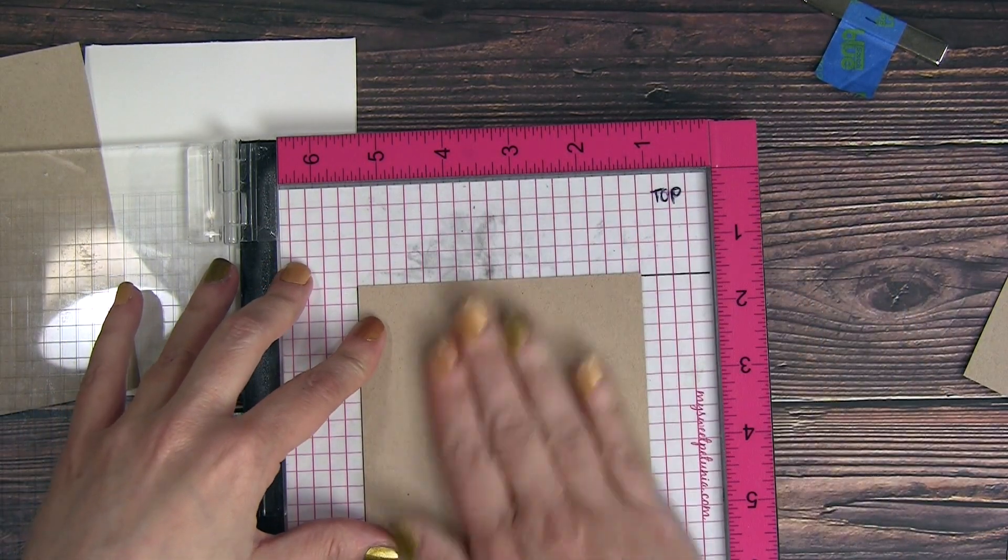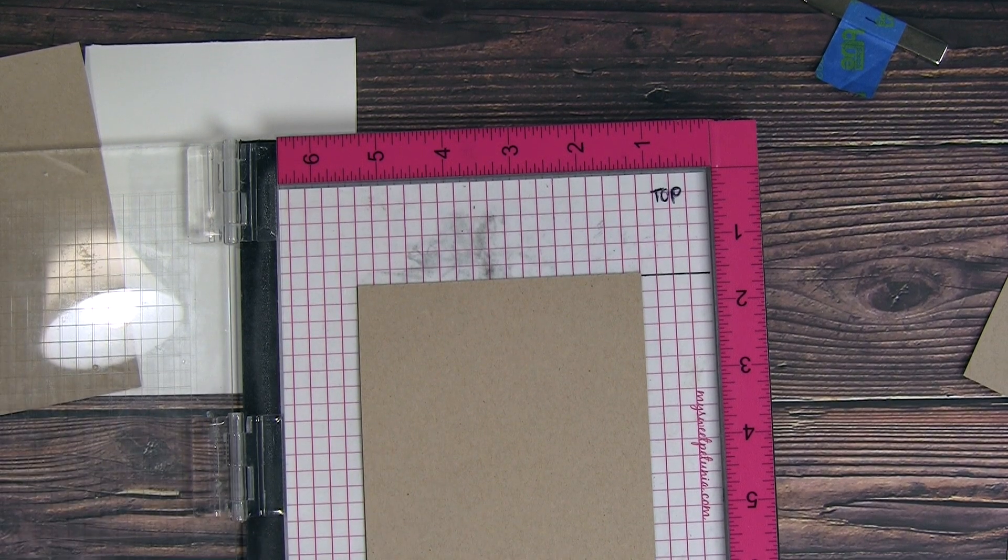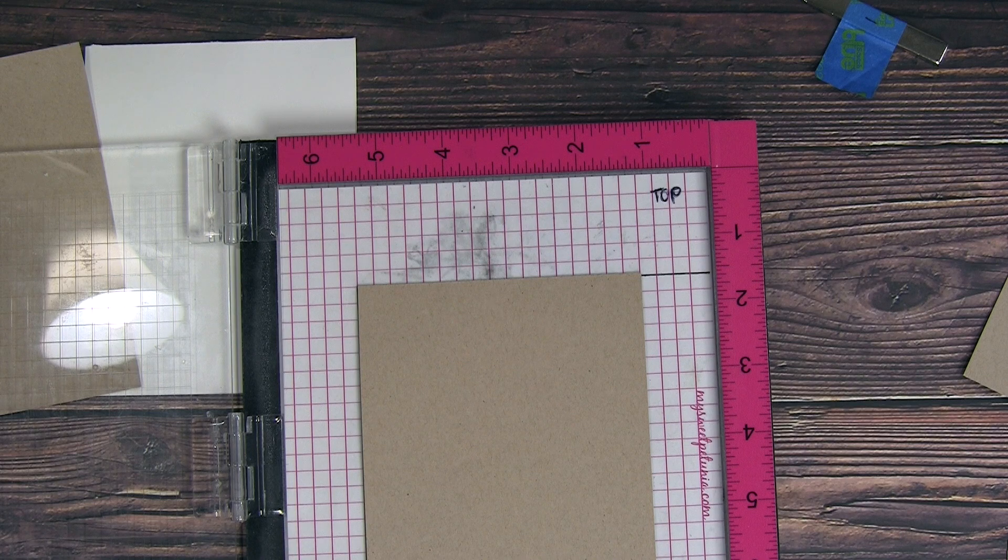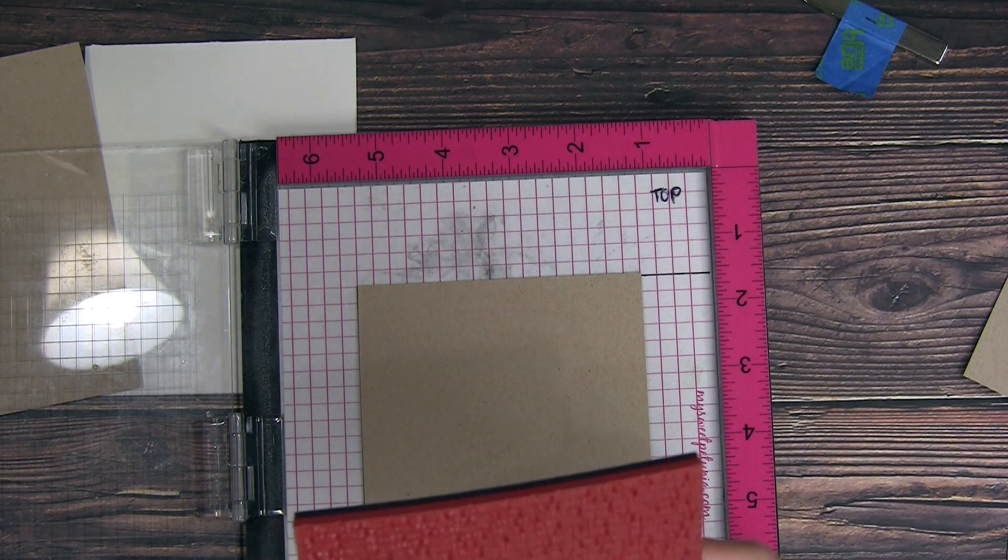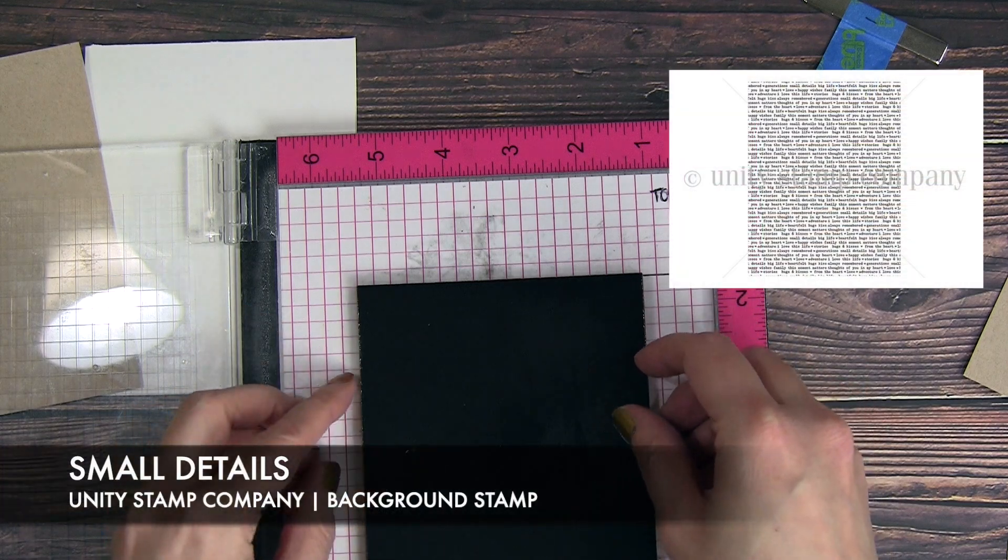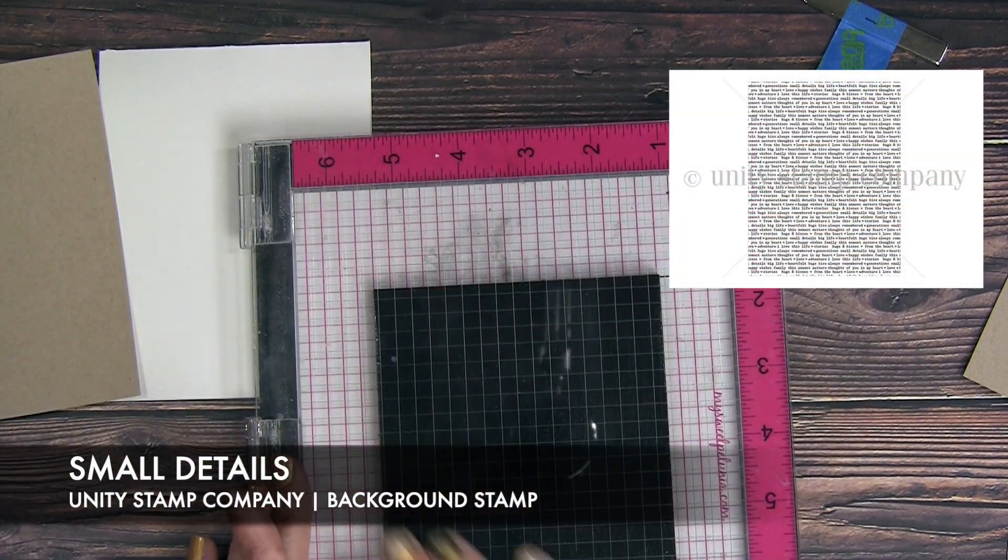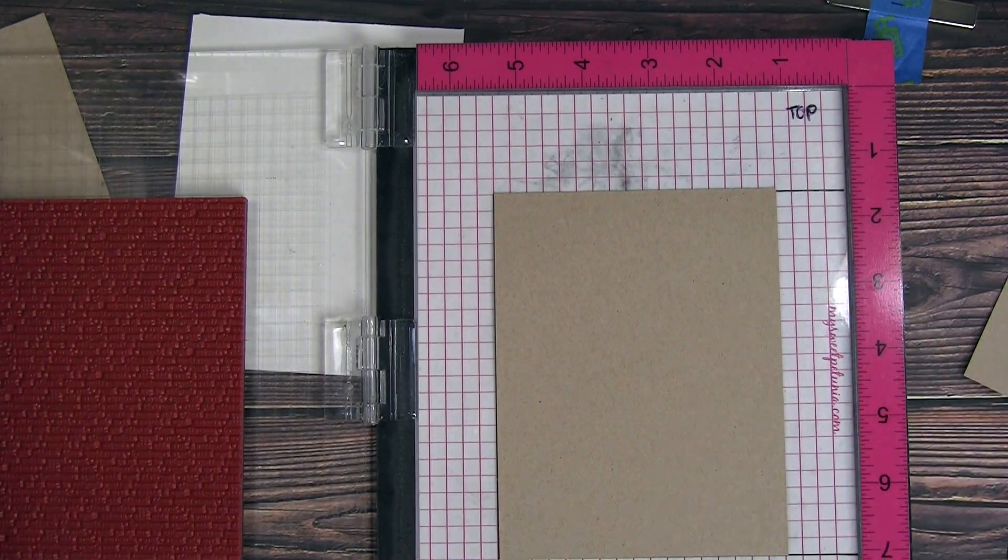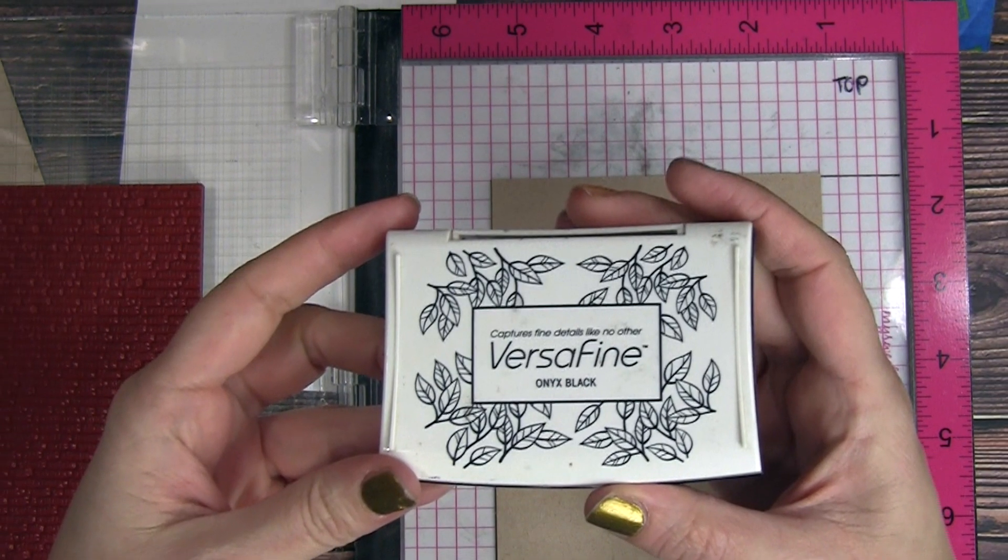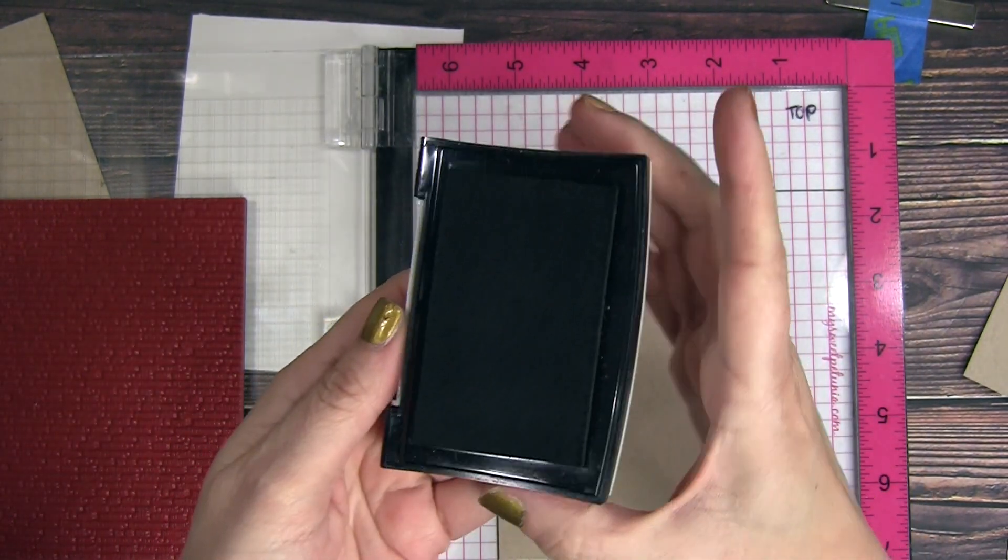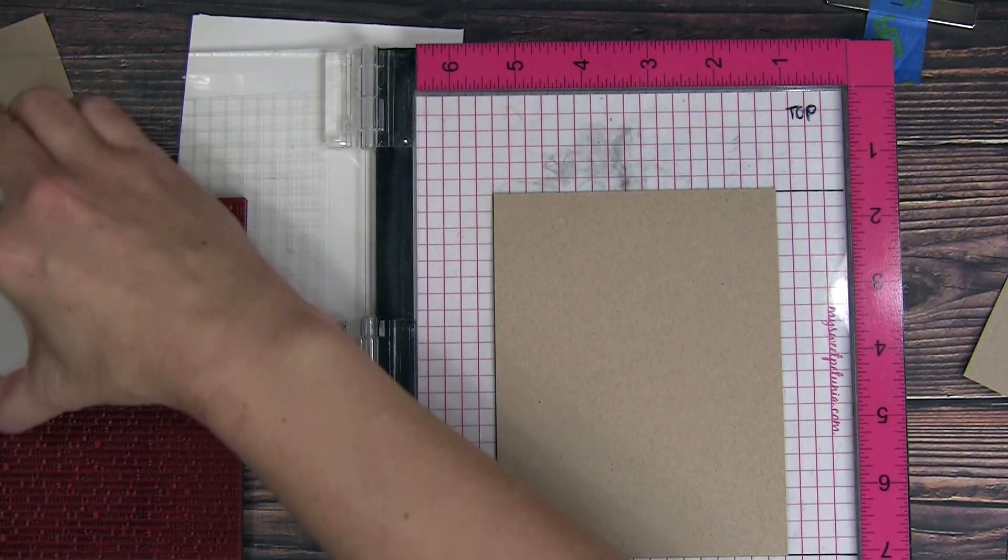I'm just going to tack it down to the base here using some repositionable adhesive. You could also use some washi tape or something just to make sure it doesn't move. And then I place this background stamp over the top. It's called Small Details, kind of has this type font to it that has some great basic words that can be used for any occasion.